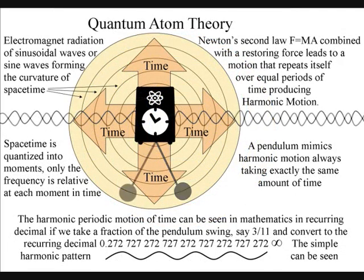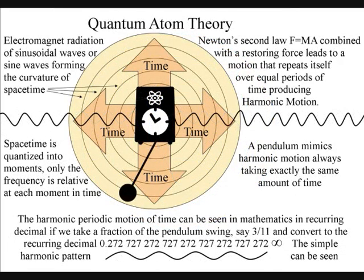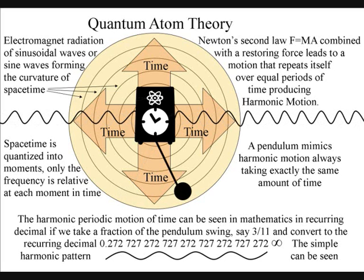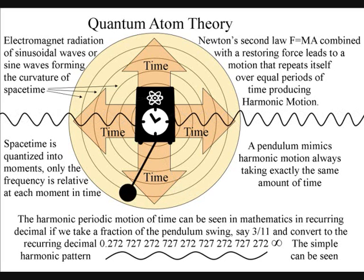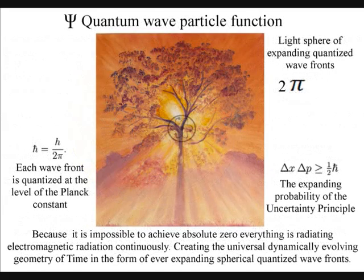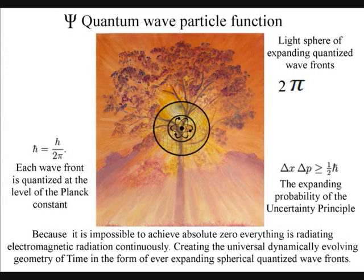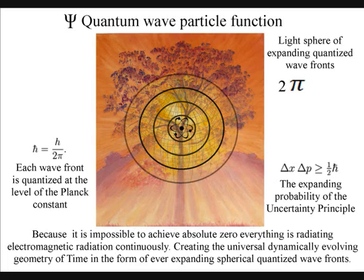In quantum atom theory, the arrow of time is formed by the forward momentum of electromagnetic radiation from each individual atom. Just like ripples on a pond, each atom will radiate out light spheres of quantized wavefronts.